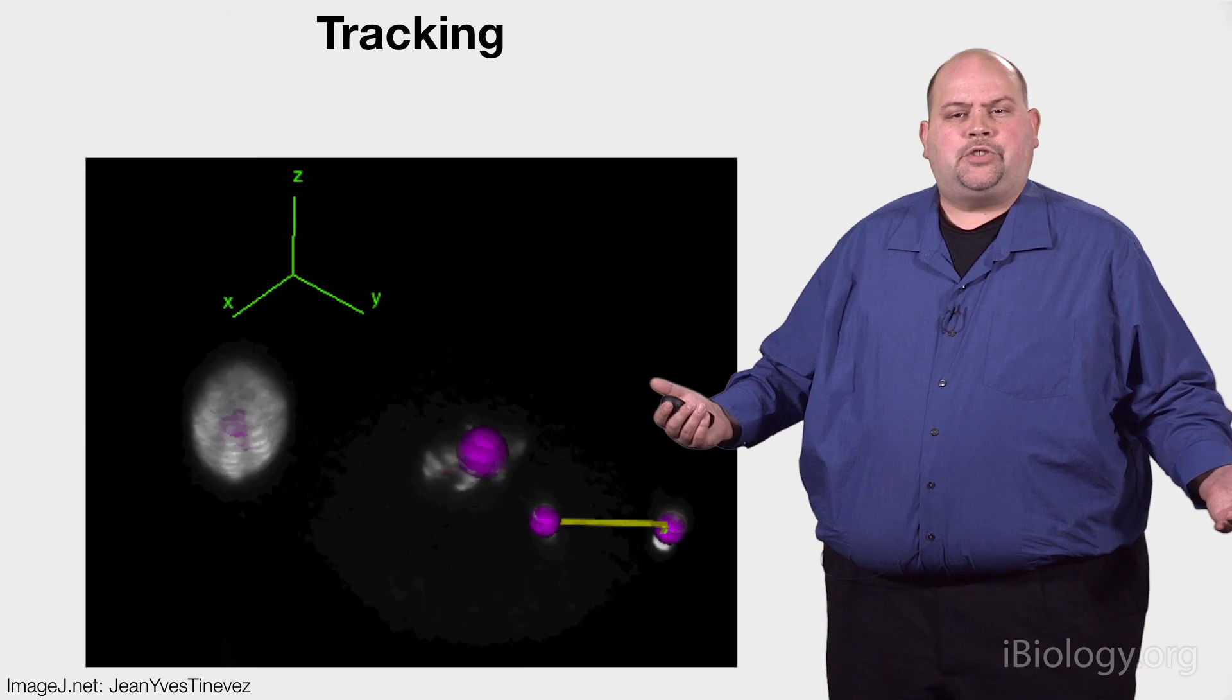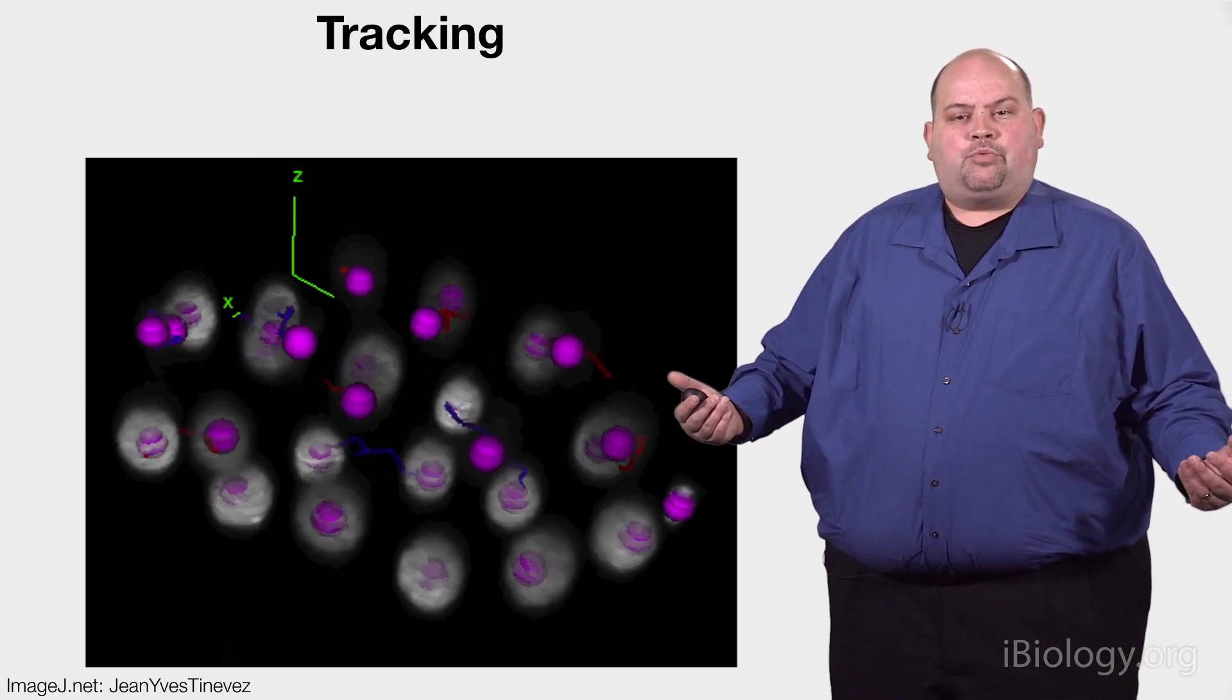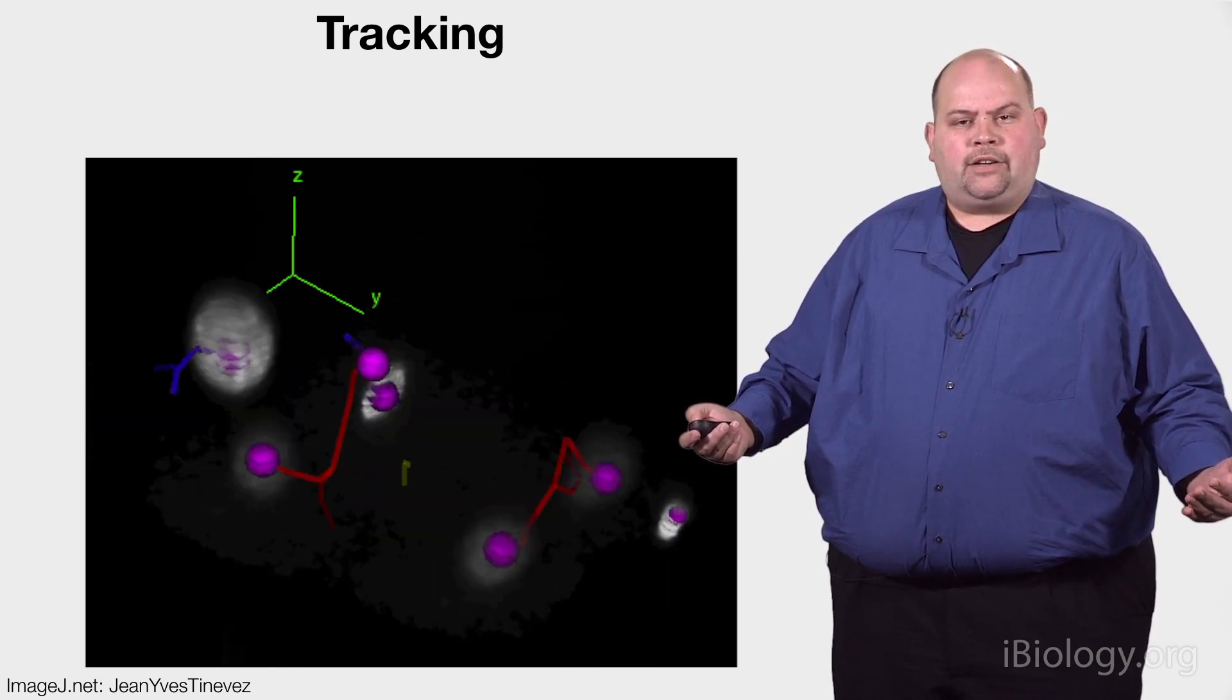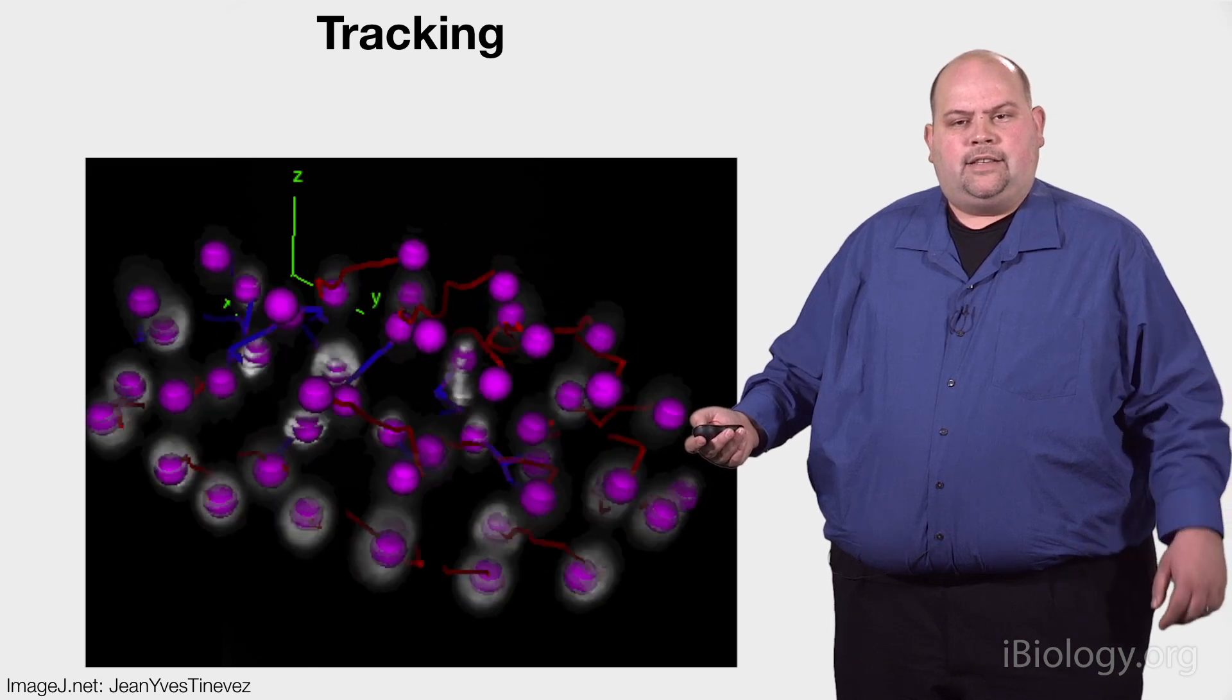And there's a very powerful tool such as TrackMate in ImageJ that makes it really easy to do this. But it's really important to have good quality data to make sure that you can actually follow these moving objects temporally and make it very easy then to track them.